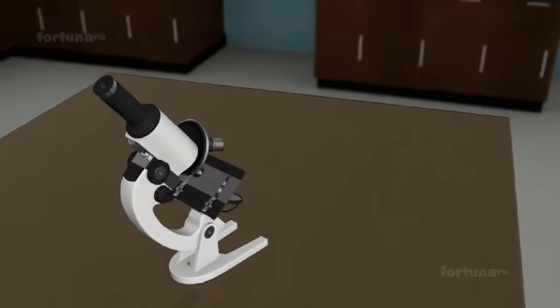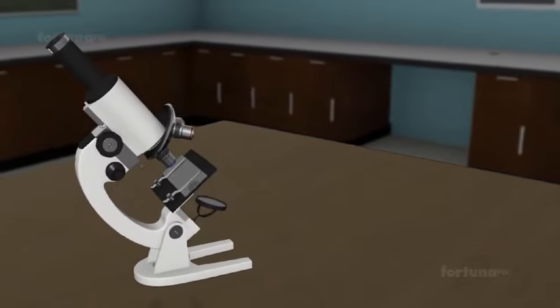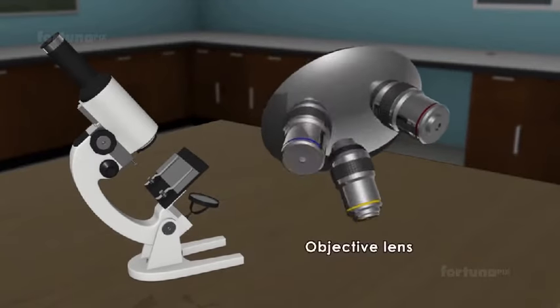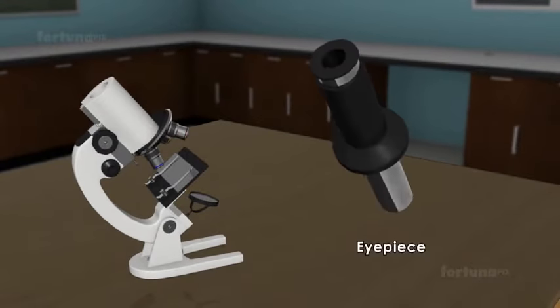There are three major parts to the compound microscope: a body tube, an objective lens, and an eyepiece.